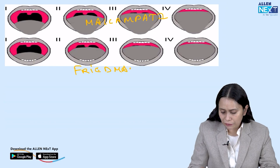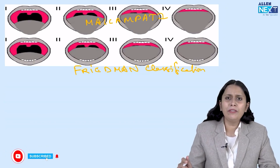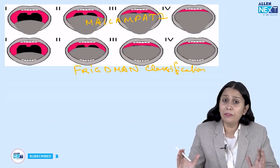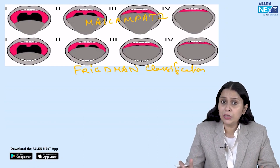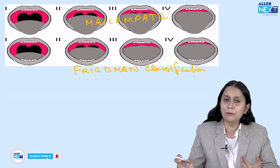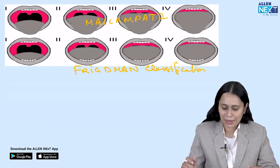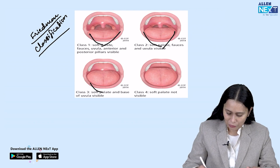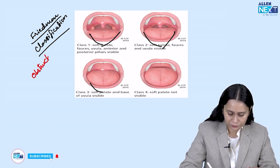If Friedman classification were not in the options, it would be a very simple question — Malampati. But when Friedman classification is in the option, you have to see the position of the tongue. If tongue is inside, it is Friedman. If it is protruding outside the oral cavity, it is Malampati. And Friedman classification is done in obstructive sleep apnea.